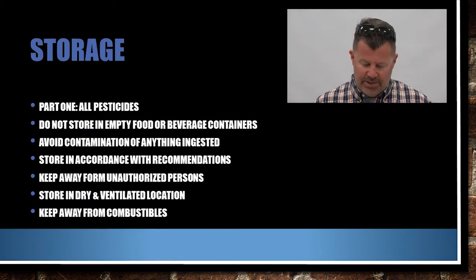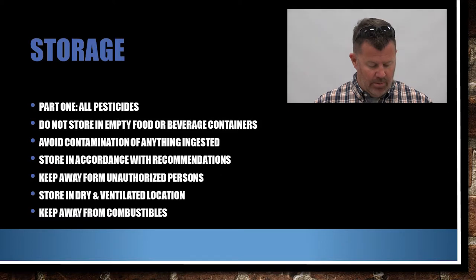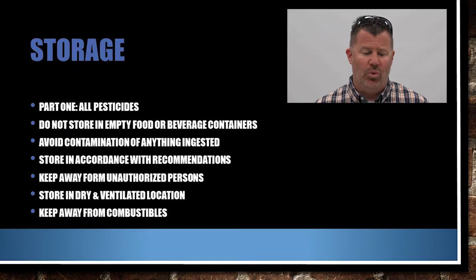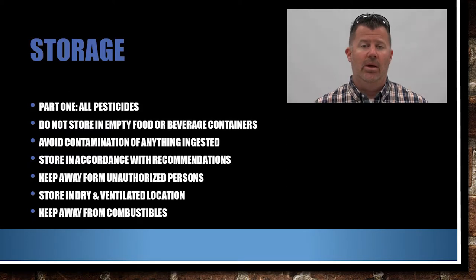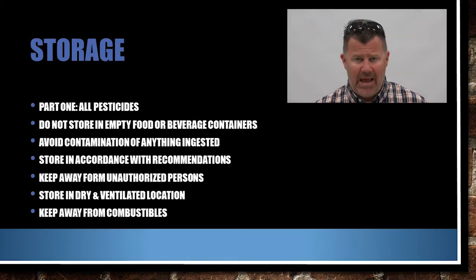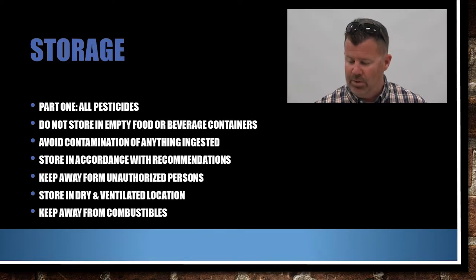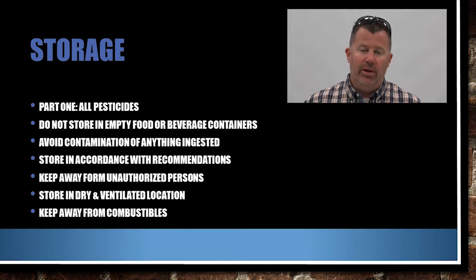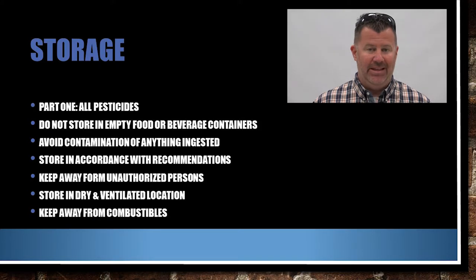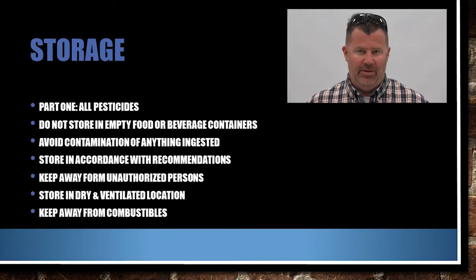Pesticide storage has two parts, starting on page 28 in your core manual. Part one covers all pesticides: do not store pesticides in empty food or beverage containers. I've seen Roundup stored in Mountain Dew bottles in the back of a truck — some pesticides are the same color and someone could drink it by mistake. Avoid contamination of anything that could be ingested.